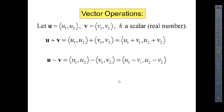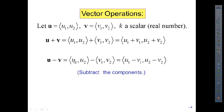When you do subtraction, you're going to do the exact same thing but subtract the components. So u1, u2 minus v1, v2 gives you u1 minus v1, u2 minus v2. Don't forget to subtract. Remember, u1 and v1 are the x components so we're keeping those together, and u2 and v2 are the y components and we're working with those together.